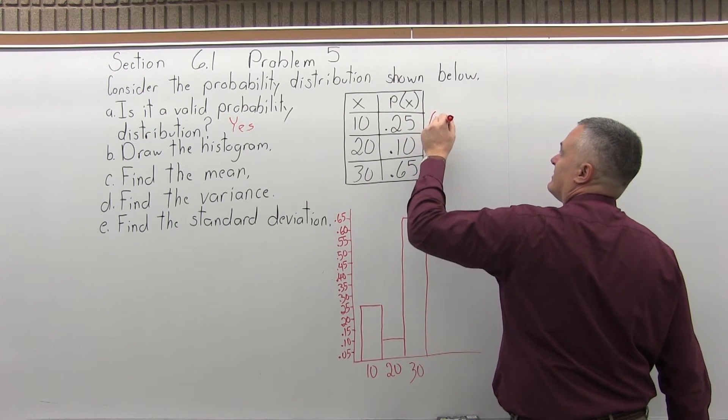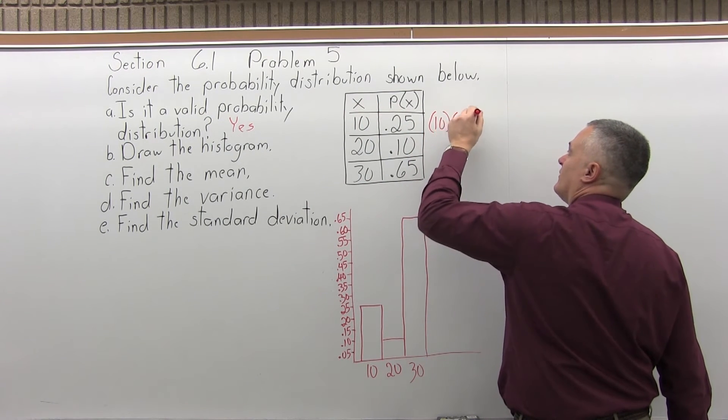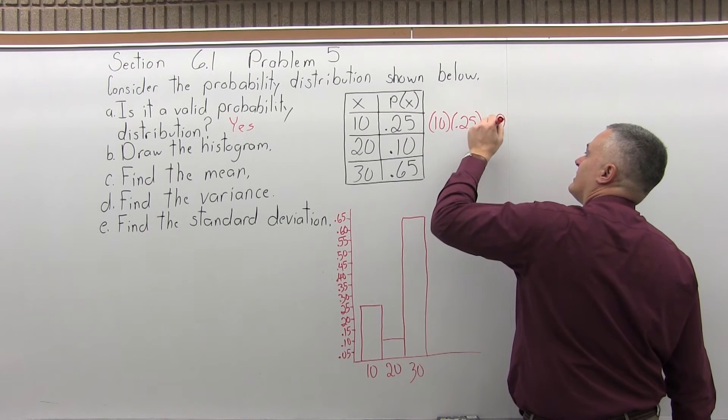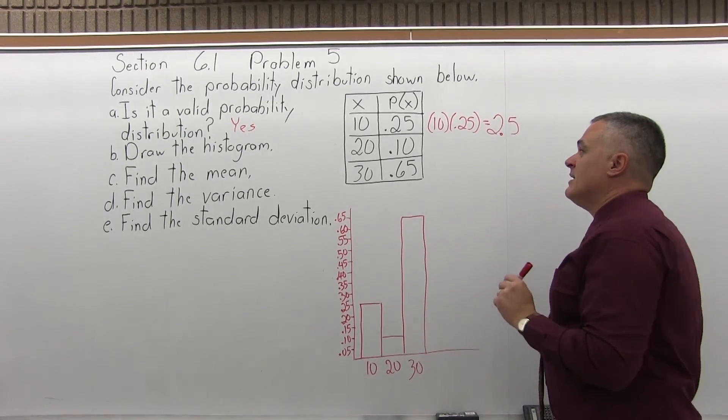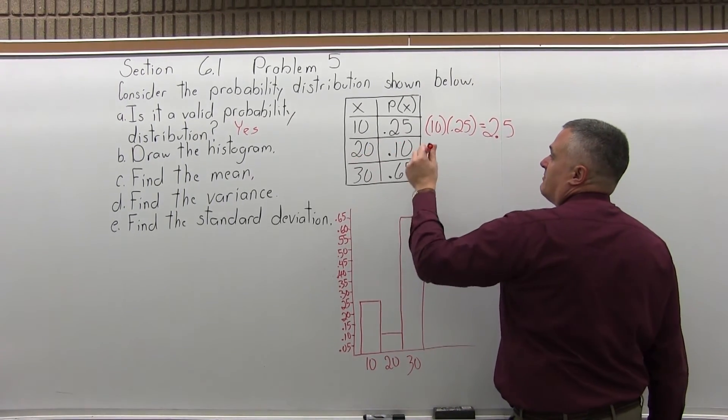So in the top row, the number in the first column is 10 times this probability of 0.25. And if you multiply 10 times 0.25, the answer is 2.5.